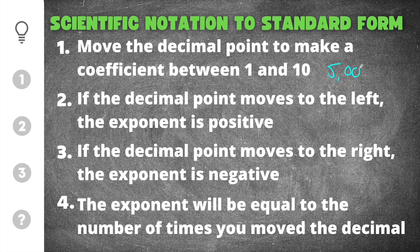For example, take the number 5,000. All whole numbers have a decimal point at the very end. You would need to move this decimal point to the left to create a number that will be between 1 and 10. If I move the decimal three times to the left, I would create a coefficient of 5. Moving the decimal leads us to the next two tips we need to remember.